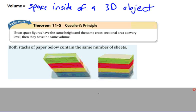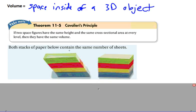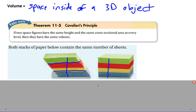This is the way to show it with this picture here. Both stacks of paper actually have the same number of sheets, so they have the same volume because they would have the same cross-sectional area anywhere. All the papers are the same length and they certainly have the same height. That's called Cavalieri's Principle, named after a famous mathematician.